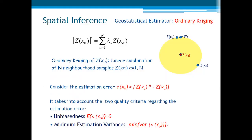Ordinary Kriging is an estimator of the value z at location x0, based on the linear combination of surrounding sample values zx alpha. For example, in this very simple illustration, what we want is a weighted average of those three sample values to get a good estimator of zx0 at location x0.